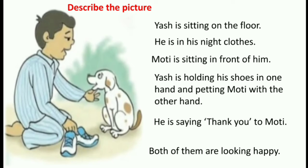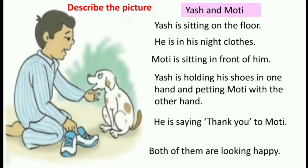So this is what we have written related to this picture and what we know about it. Now once we have completed writing the sentences, the next thing you have to do is give this passage a title. So let's give it a title: Yash and Moti. Let's read it once more. Yash and Moti. Yash is sitting on the floor.